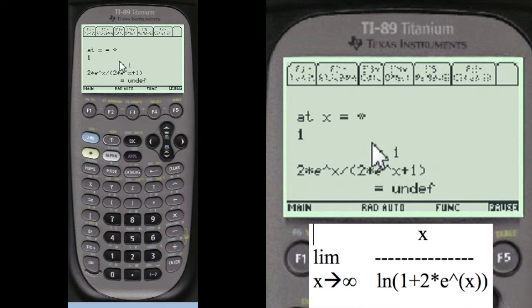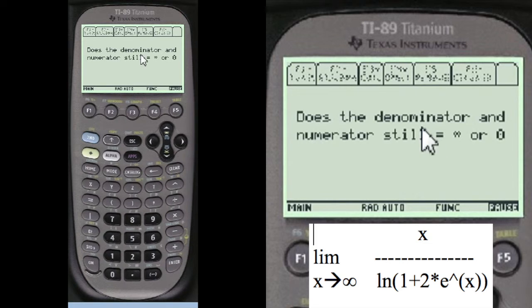And so now we have something different. We have at infinity, one is equal to one. Infinity at this here is undefined. So it doesn't equal infinity or zero anymore.